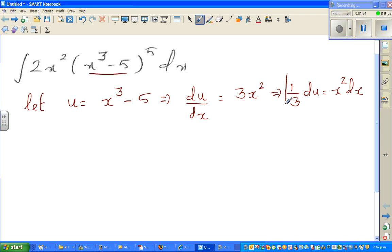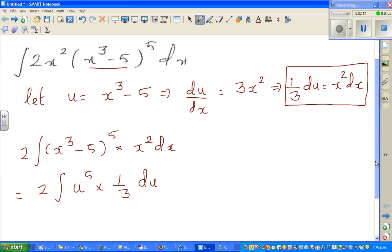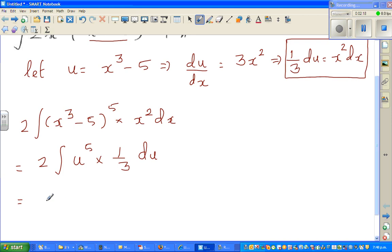So 1/3 du is x squared dx. So I can see an x squared dx in the function. So I'll box this away. I'll use this later. So I can write now this function as 2 times integration of x cubed minus 5 to the power 5 times x squared dx. So this is rearranging and writing this, taking the constant down. So this becomes 2 times integration of, this is nothing but U. So u to the power 5 times, this is 1/3 du. Can you see how elegant it has become. So this is 2/3 times integration of u to the power 5 du.